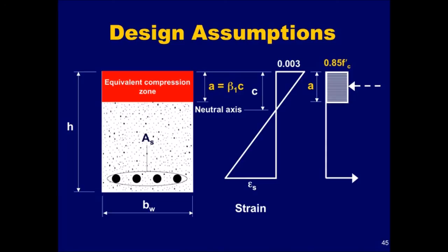This distance A is equal to a constant beta 1 times the neutral axis depth, C.